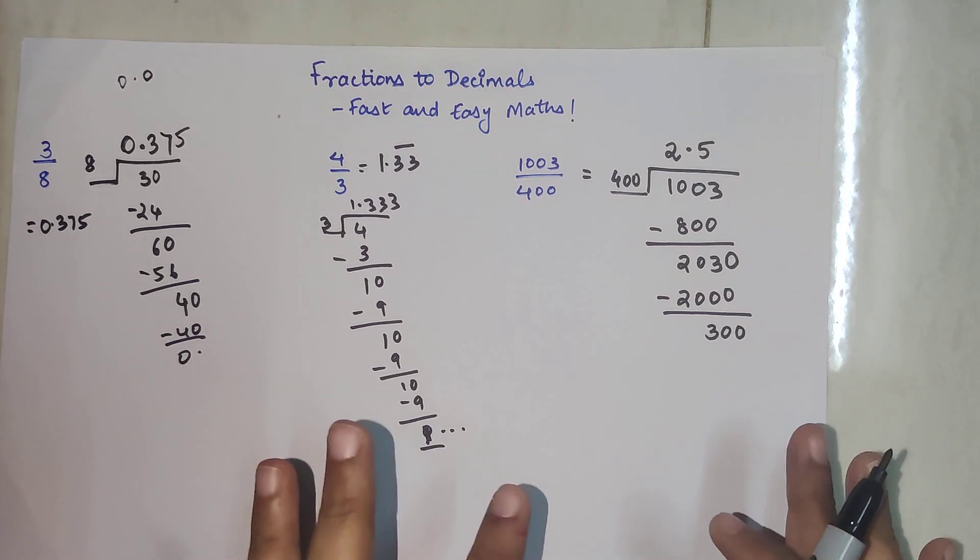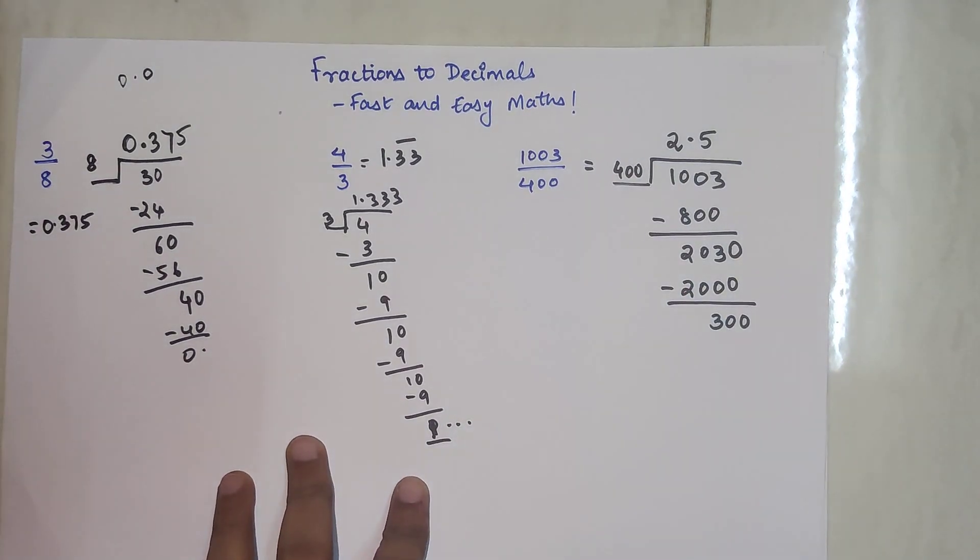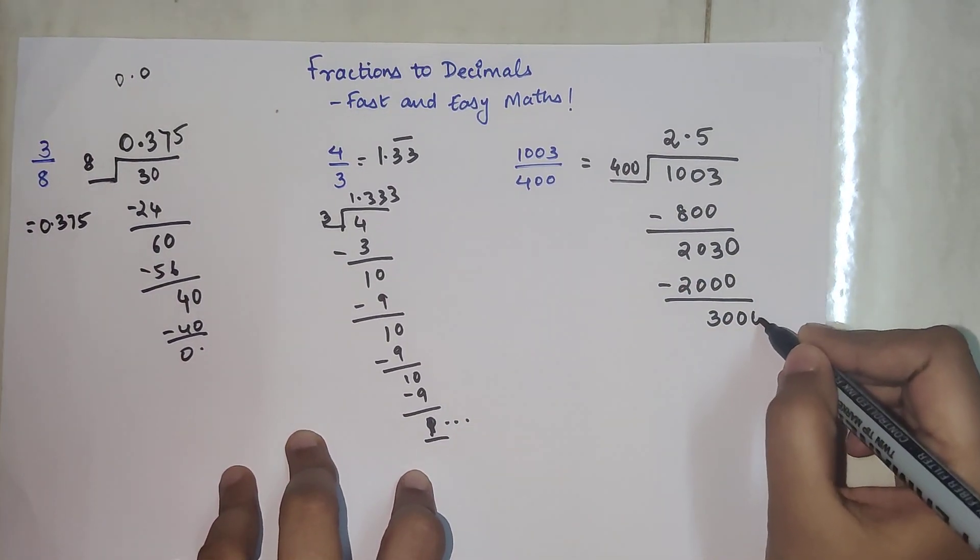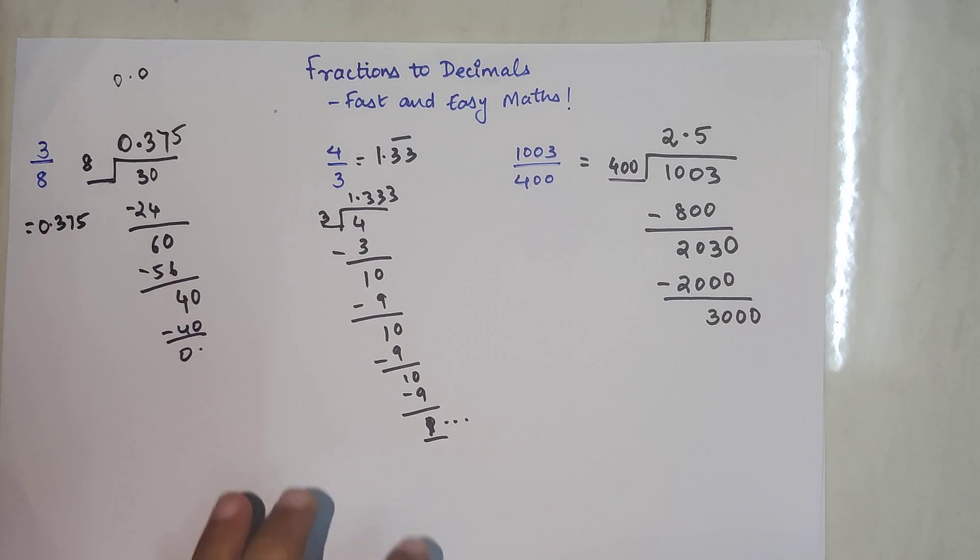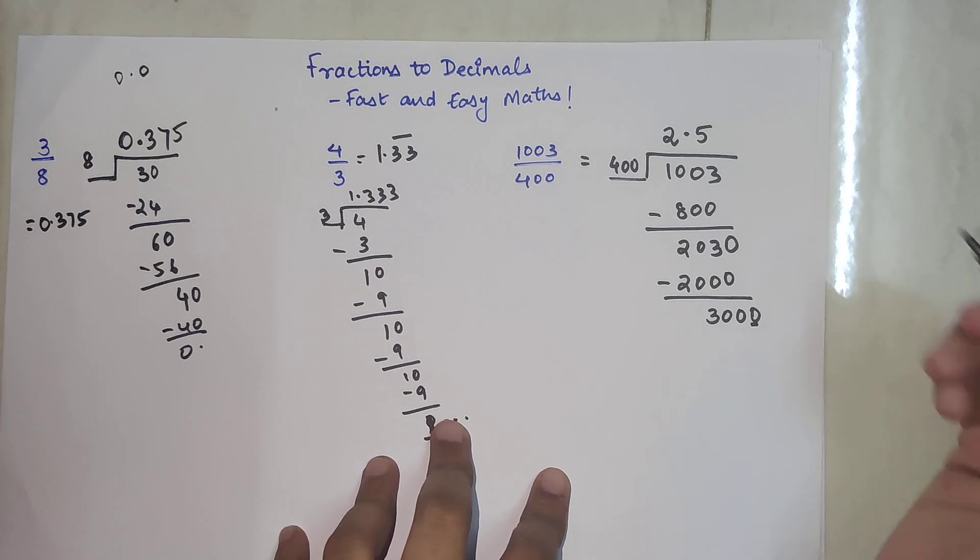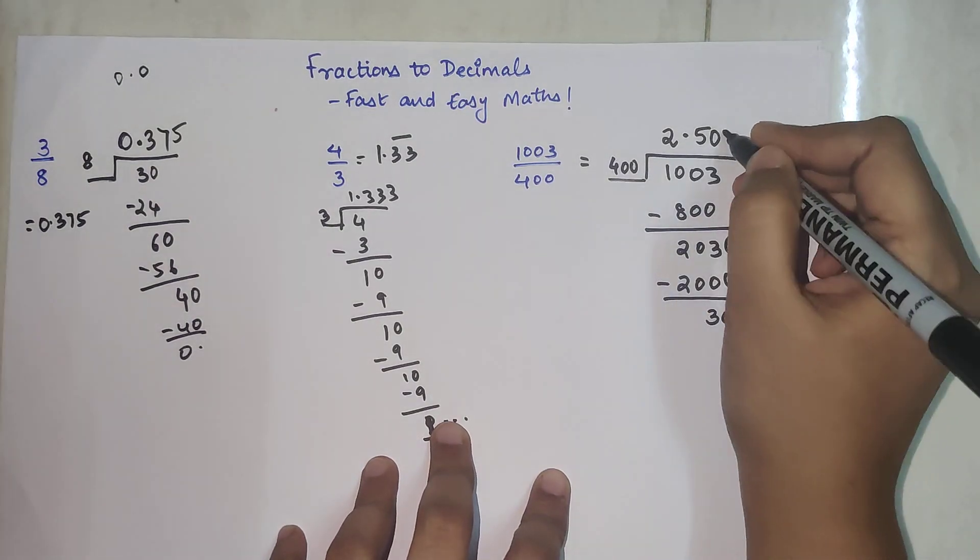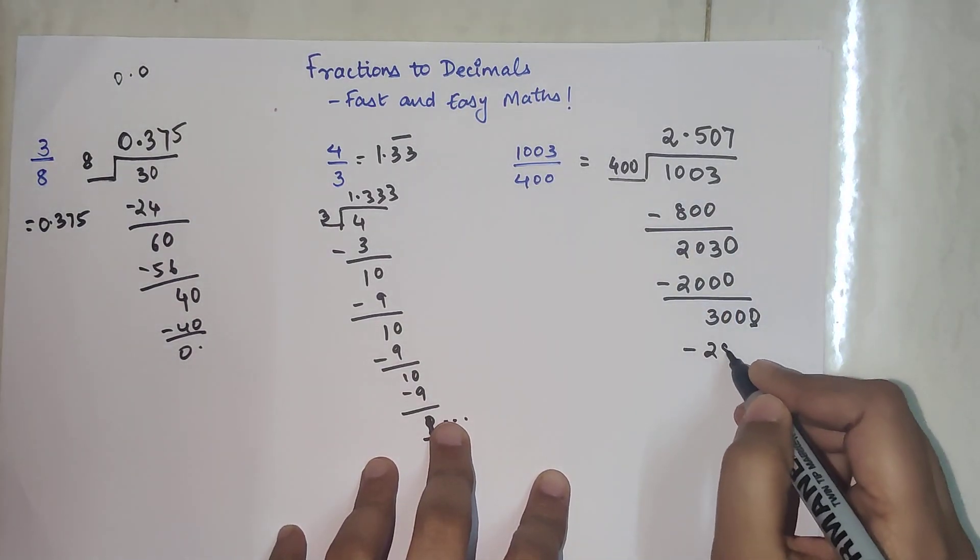Now the problem here is 300 is still smaller than 400. So I have to take one more 0. Like I said, we have the liberty of taking only 1 0 when we've taken a decimal point. So if I've taken an additional 0, I'm going to add that 0 in my quotient as well.